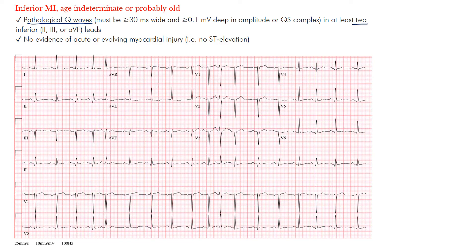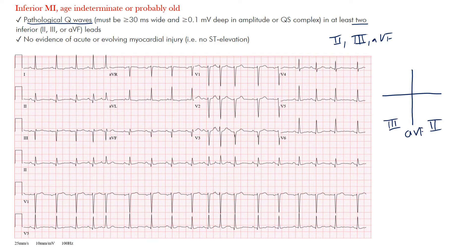We want to see pathological Q waves in at least two of the inferior leads. Remember, the inferior leads are II, III, and AVF. Drawing our quadrant system: lead II is here, lead III is here, lead AVF — notice on the inferior portion. Remember, it has to be in at least two contiguous leads — it can be in II and AVF, in III and AVF, or in all three. Note that II and III alone are not contiguous.